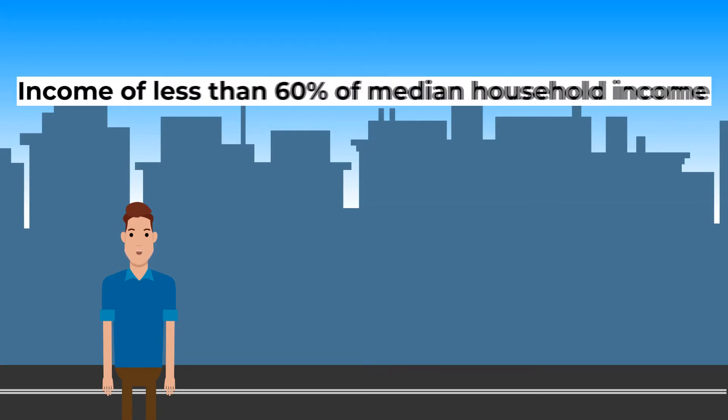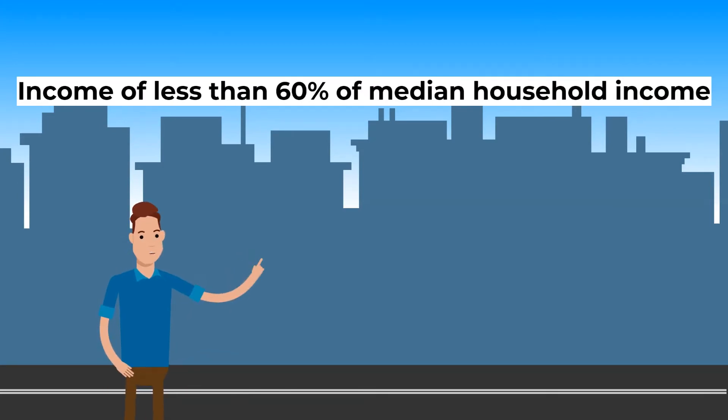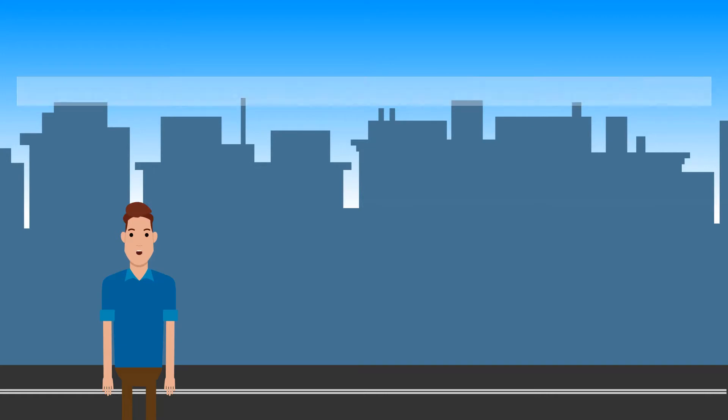In Britain, relative poverty is classed as those with an income of less than 60% of median household income after deducting household costs. This was £27,300 in 2017. One in five people in the UK live below the official poverty line, with 14 million people in relative poverty.